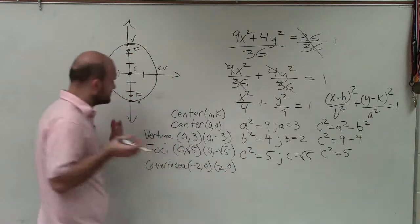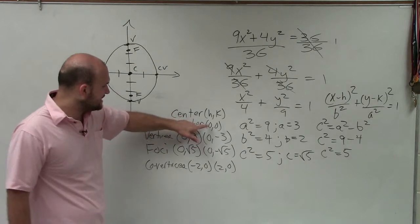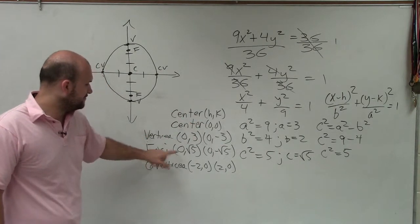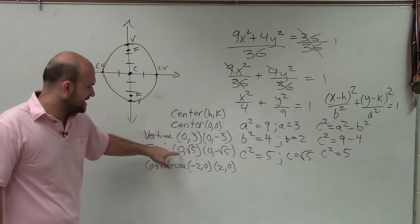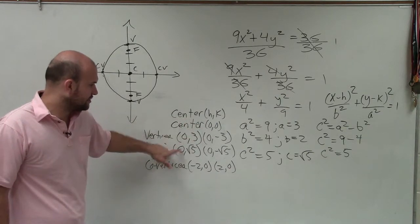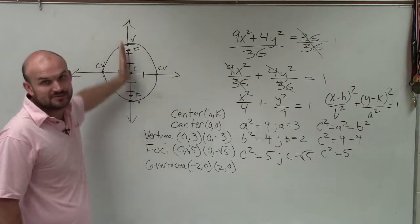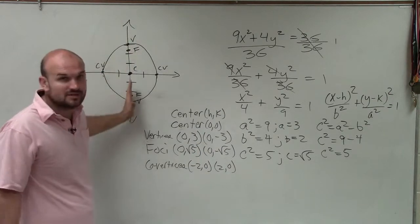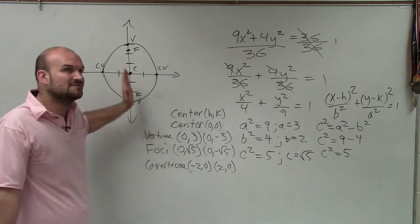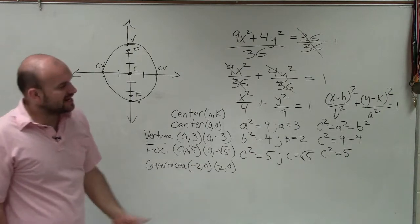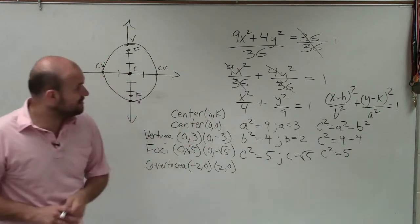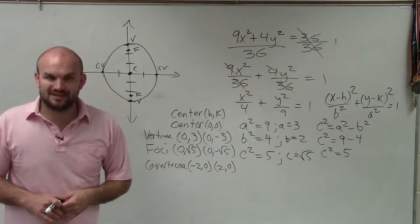And the last thing I always want you guys to notice about this is notice that the center, the vertices, and the foci all have the same x-axis, or all have the same x-coordinate of 0. The reason why is they all lie on that major axis, which is vertical, which is the y-axis, which has an x-coordinate of 0, or an x-value of 0. So there you go, ladies and gentlemen. So that is how you graph your ellipse. Thanks.